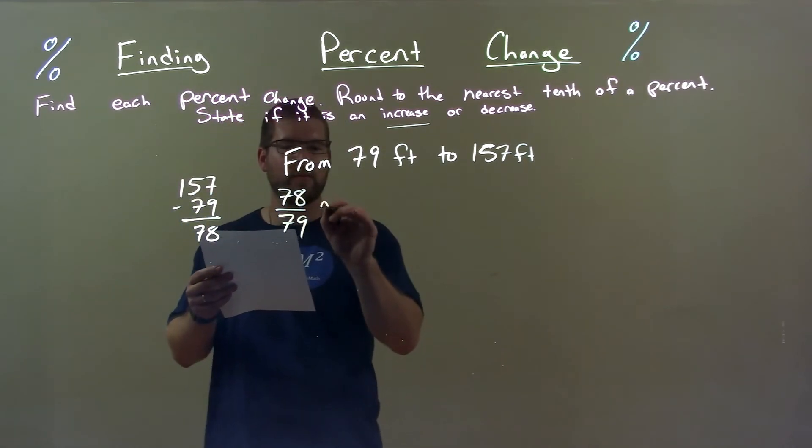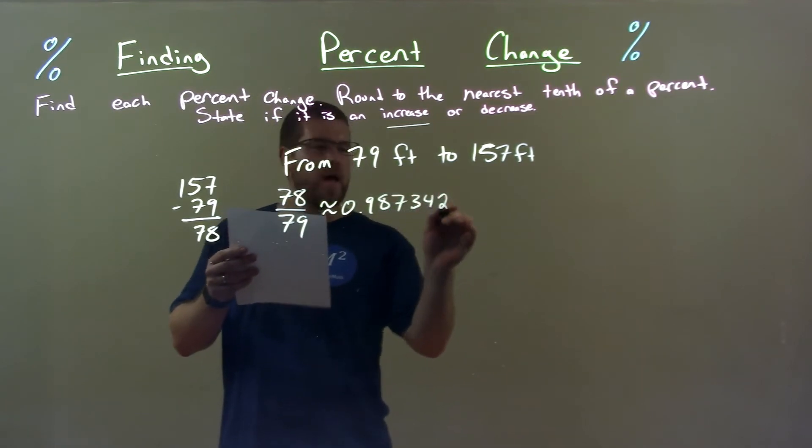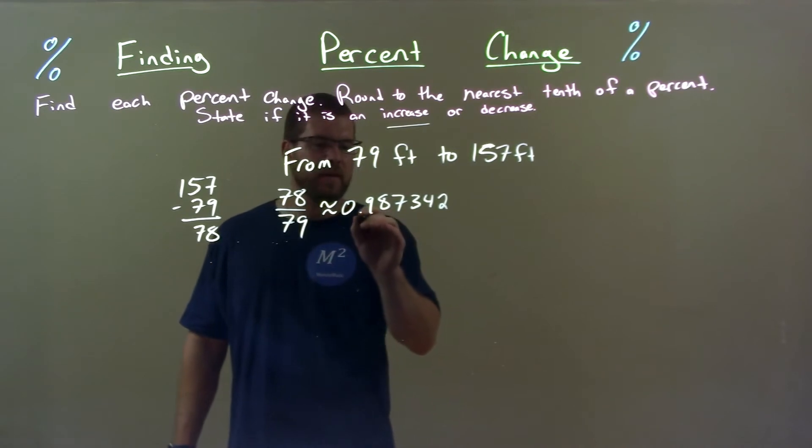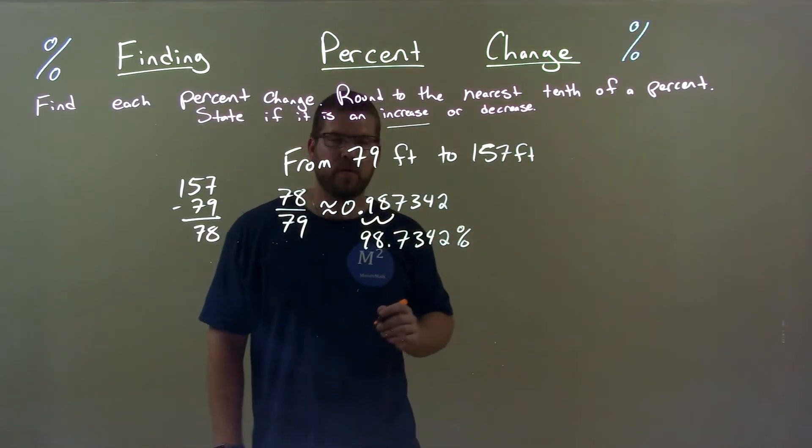Alright, that decimal comes out to be 0.987342. That as a percent though - decimal place, two spots to the right. We got 98.7342 percent.